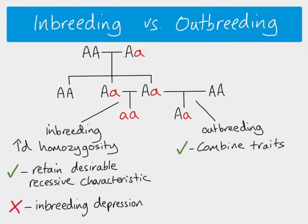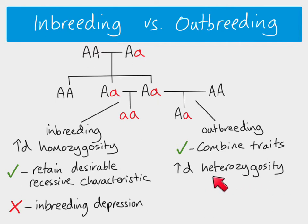Outbreeding is good because you can combine traits. This individual has got genes for many different characteristics, as does this individual. So it's possible to take a crop plant which has a trait for being able to withstand frost and breed it with a non-related individual which has a trait for being able to produce a lot of fruit. You breed them together and you get both of those beneficial characteristics — you're combining traits. When you do outbreeding, you get more heterozygosity, and this gives us something called hybrid vigour.